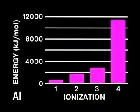From a knowledge of the electron configuration of neutral aluminum, can you account for this dramatic jump?